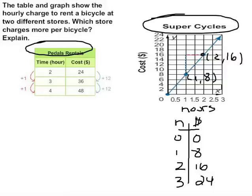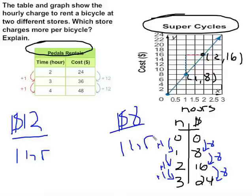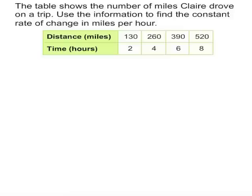I know that this one is going to be $12 at Pedals Rentals. $12 for every one hour is the constant rate of change. Well, at Super Cycles, I know that I am increasing at $8 for every one hour that I increase. So that means that for Super Cycles, the constant rate of change is $8 per one hour. So which store charges more per bicycle? We know that Pedals charges more because they charge $12 per hour.